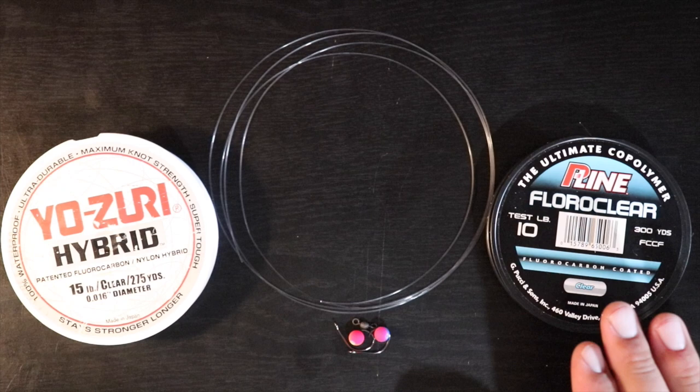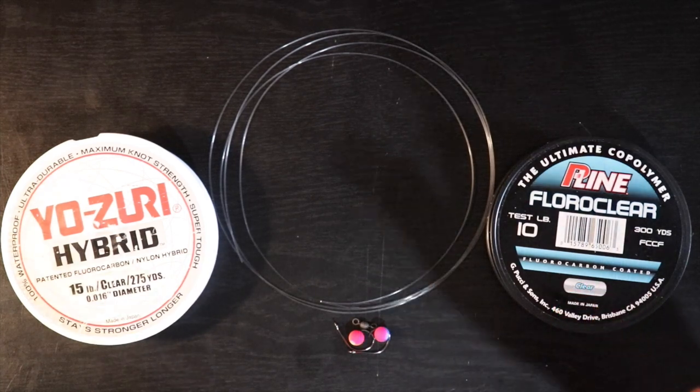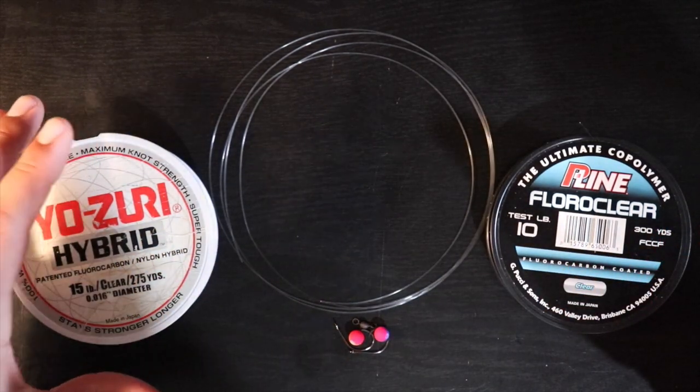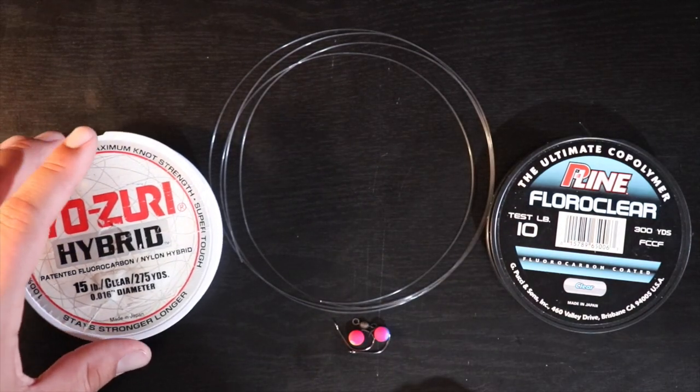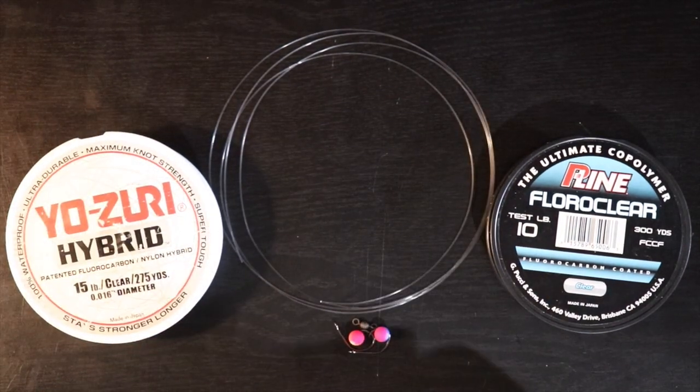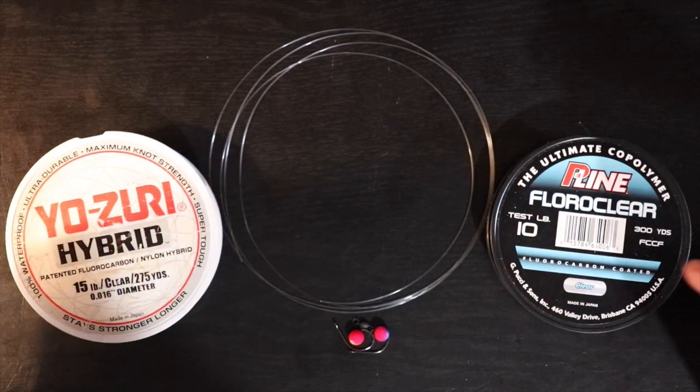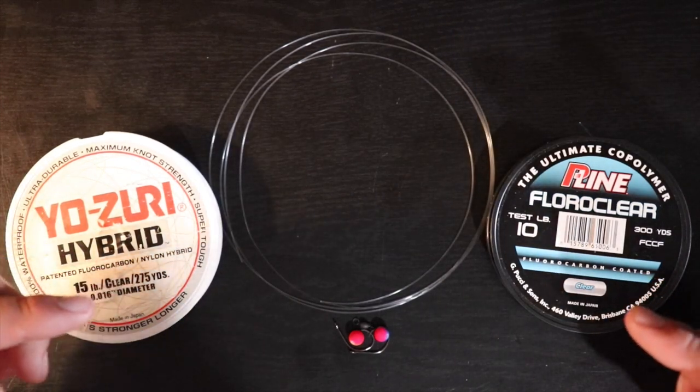If whiting is pretty much the only thing I've been catching, I'll stick with the 10 pound. If I've been catching some pompano and maybe some redfish, I might go ahead and bump up to the 15 just to make sure I'm not getting cut off or anything like that. So let's go ahead and jump right into how we're going to tie this rig.